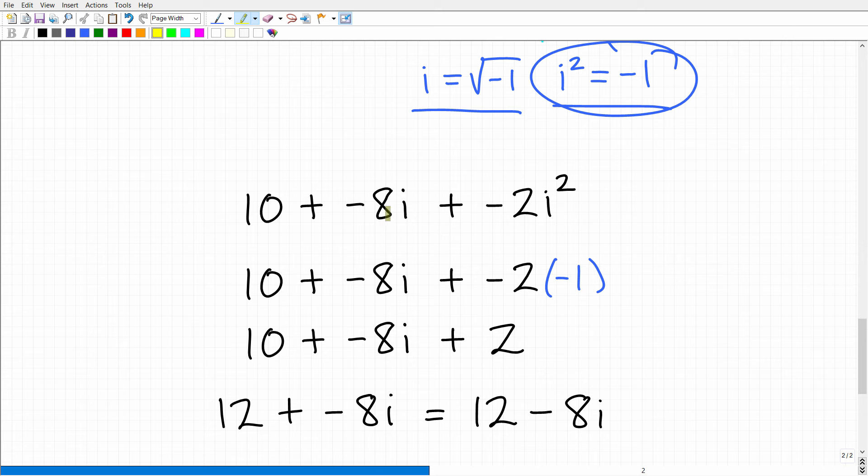So here we have 10 plus negative 8i plus negative 2i squared. So we're going to replace that i squared with negative 1. And then we're just going to go ahead and simplify. So this is going to give us 10 plus negative 8i plus negative 2 times negative 1 is, of course, positive 2. So now we have 10 and 2. That's going to be 12 plus negative 8i, which, of course, is our answer. Again, we have a complex number in a plus bi form.